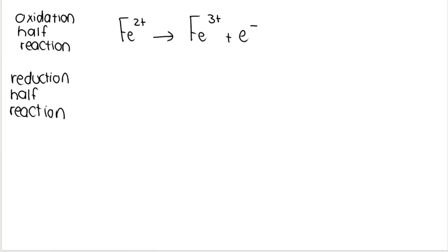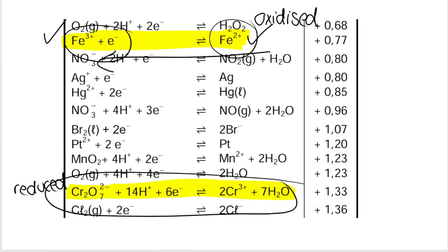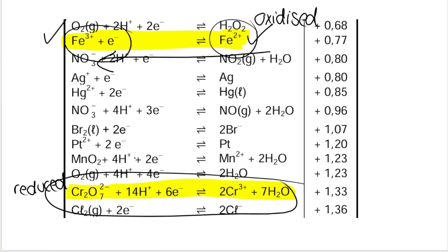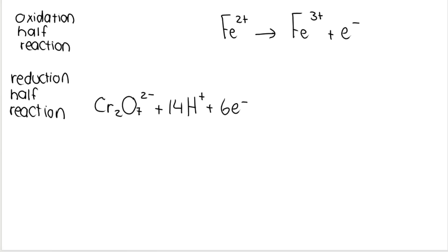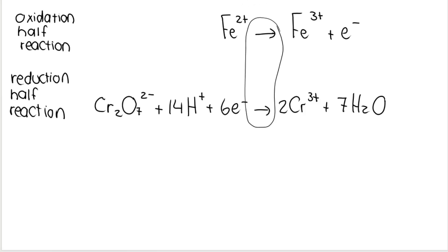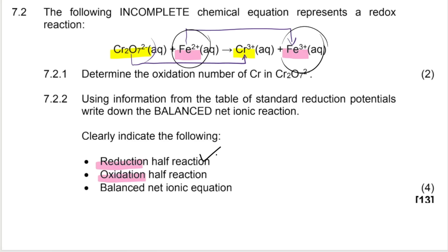Then the reduction half reaction — the second reaction you come across on the table. As I said earlier, the reduction half reaction is read from left to right, just like reading a book. So everything on the left-hand side I write down first, then an arrow, then 2Cr³⁺ plus 7H₂O. I shifted it a bit to the right because I like to try and line up the arrows in my reactions.